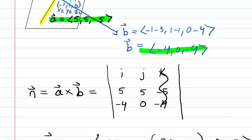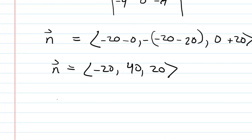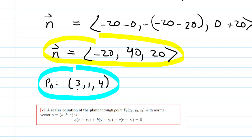Now we have all the data needed to get the equation of the plane. We can choose either point — let's pick (3, 1, 4). We'll plug those coordinates along with the normal vector into the standard equation of a plane. The point is plugged in for x-naught, y-naught, and z-naught, and the normal vector components are plugged in for a, b, c — the direction numbers.